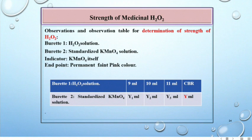Calculations: Burette 1 contains H2O2 solution, burette 2 contains standardized permanganate solution. Indicator is permanganate itself and endpoint is permanent faint pink color. Record the reading as Y ml.